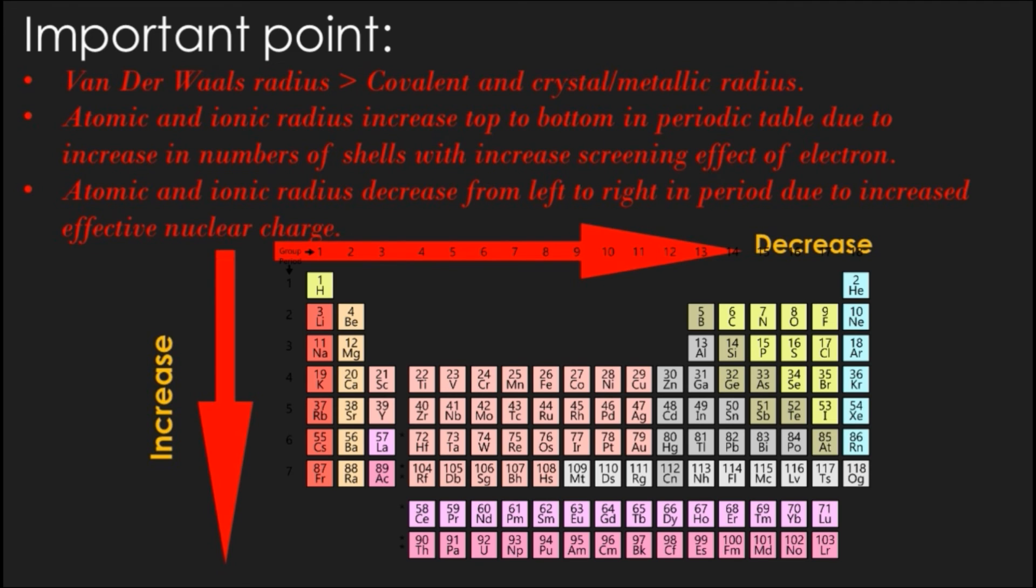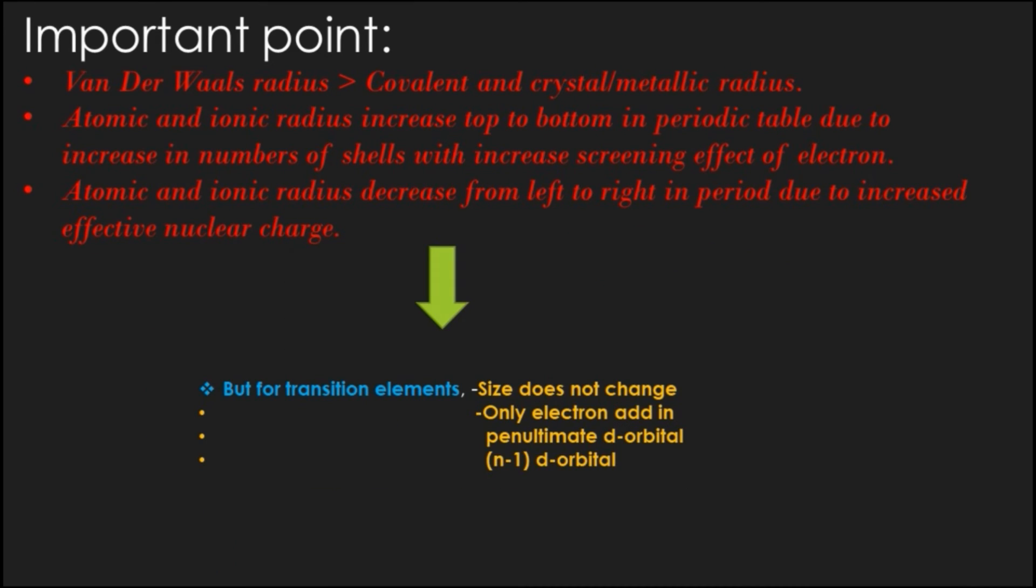But in the case of transition elements, size does not change much since the addition of electrons takes place in the penultimate d orbital. Penultimate d orbital means electrons are always added in the second-to-last shell of orbitals. For example, the 4d orbital is filled after filling the 5s orbital.